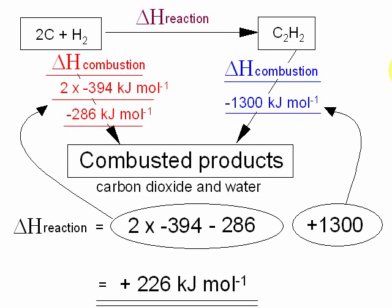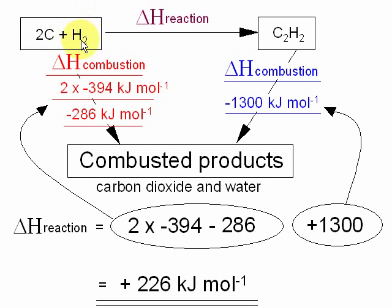Here is the Hess cycle. We start with carbon and hydrogen, and they react to form acetylene, C2H2 — and it's this reaction for which we don't know the enthalpy. However, we know that the enthalpy of combustion of the reactants is going to be two times the enthalpy of combustion of carbon, plus the enthalpy of combustion of hydrogen. All the red part there represents the enthalpy change going from the starting materials to the combusted products, which are carbon dioxide and water.